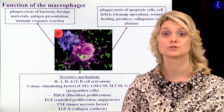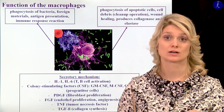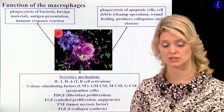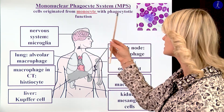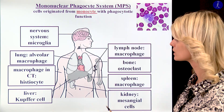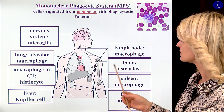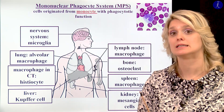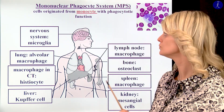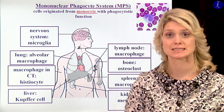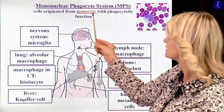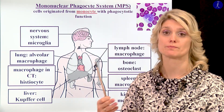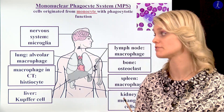We can find macrophages in the peripheral organs. These macrophages within the periphery will form a group which is called the mononuclear phagocytic system. All of these cells develop from the monocytes. After they go to the periphery, they have phagocytotic function.